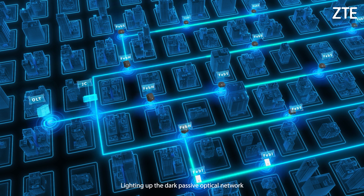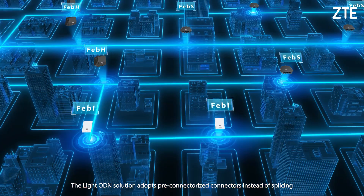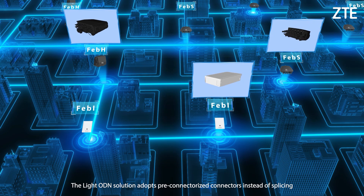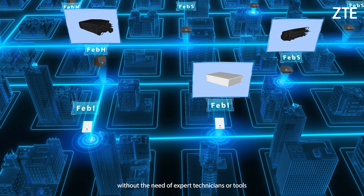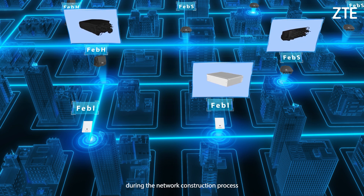Lighting up the dark passive optical network ensures the accuracy and visualization of optical link resources. The Light ODN solution adopts pre-connectorized connectors instead of splicing, without the need for expert technicians or tools during the network construction process.